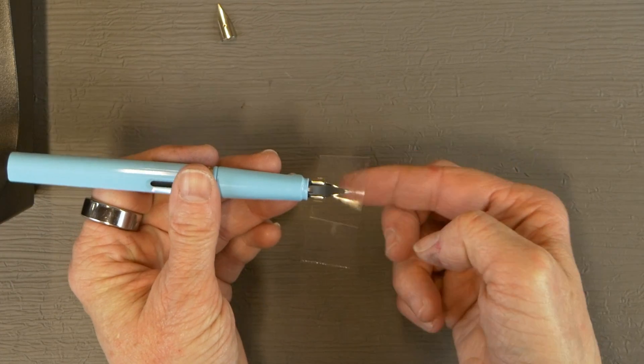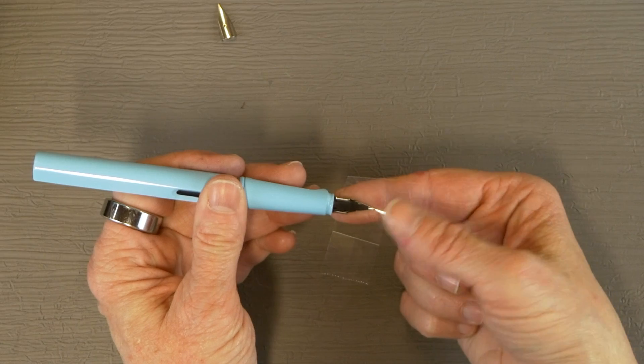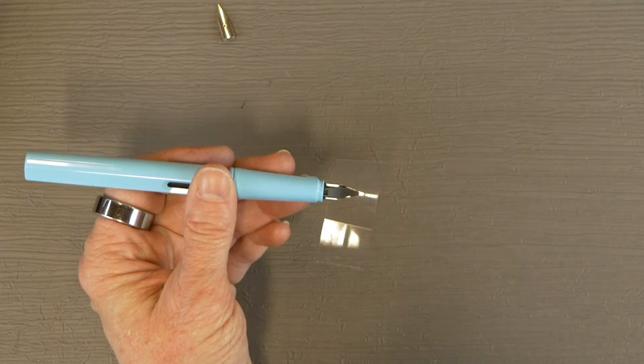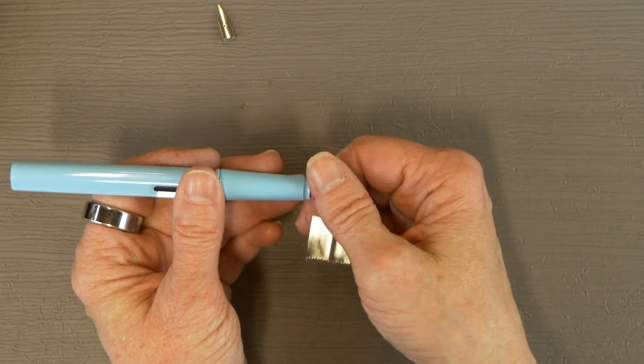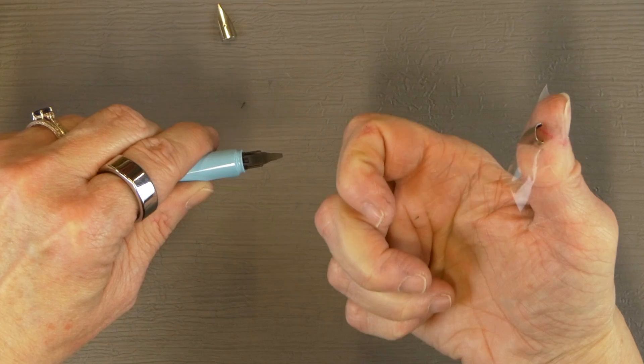I like to flip it over so you can see what you're doing. You want to grab the nib and not the nib and feed completely. You don't want to pull the feed out, trust me on that one. You just want to make sure, wiggle a little bit, and it comes right off.